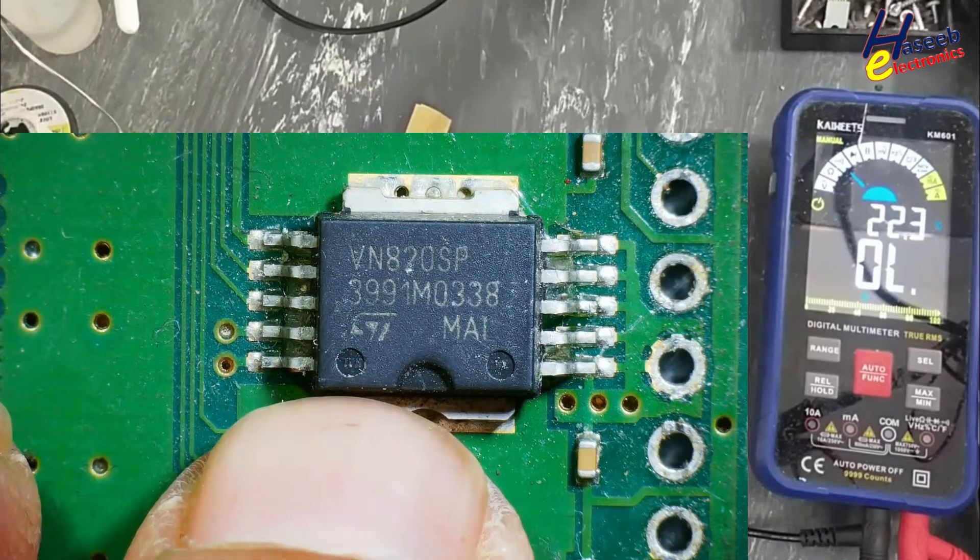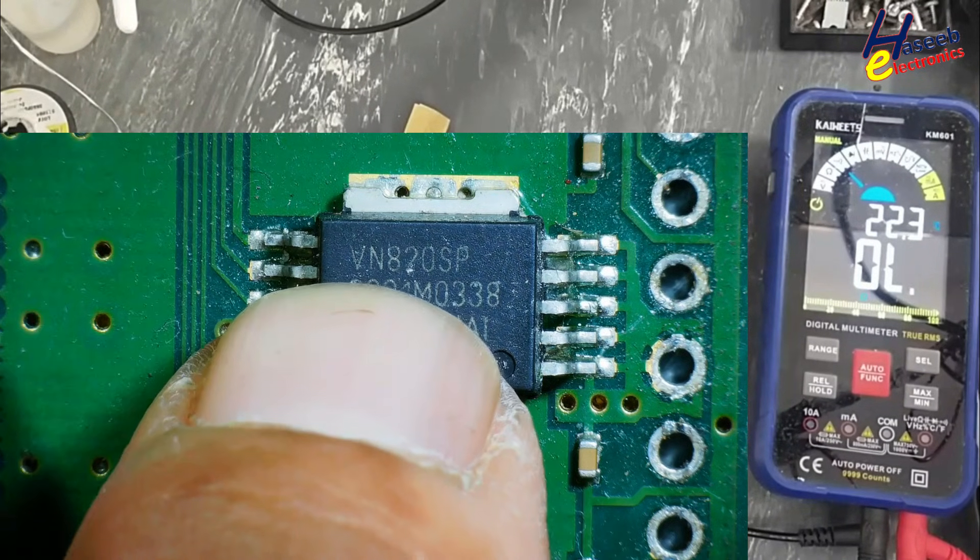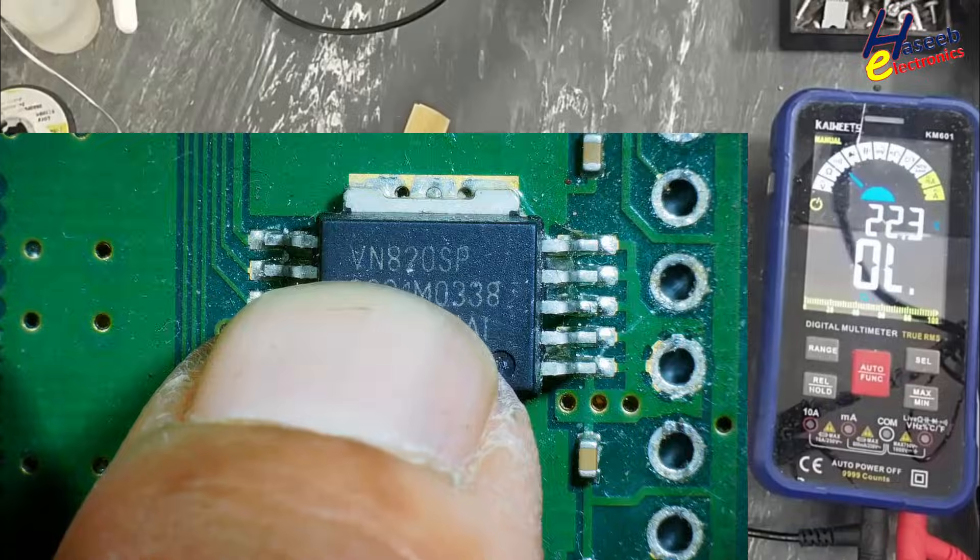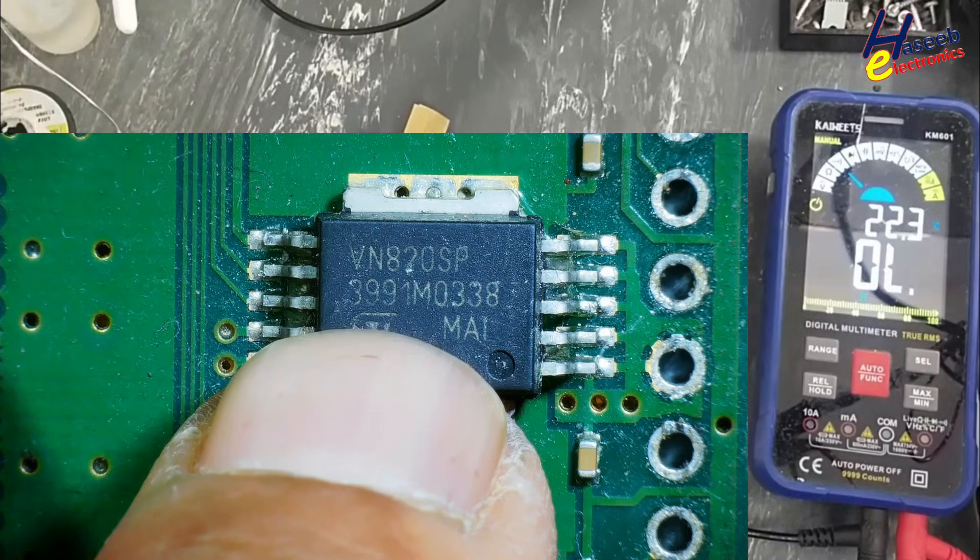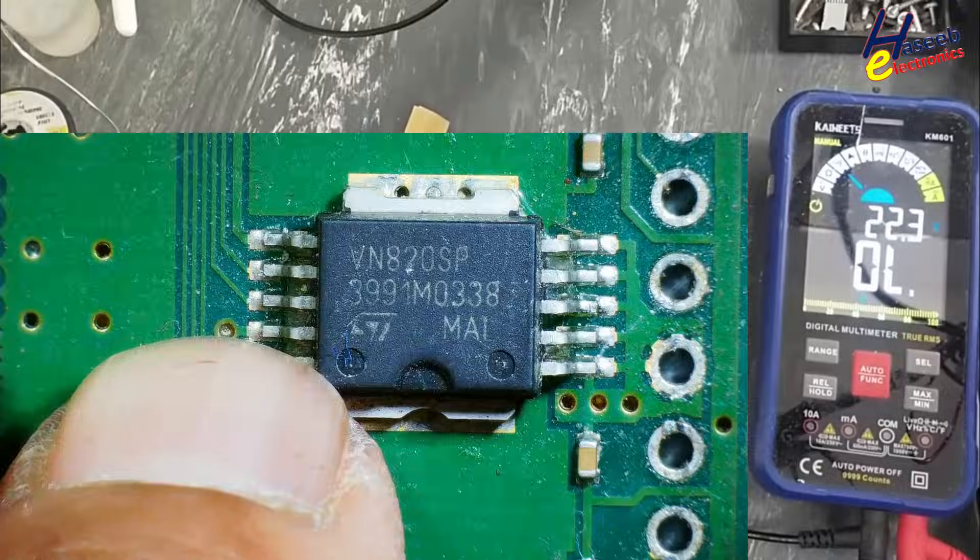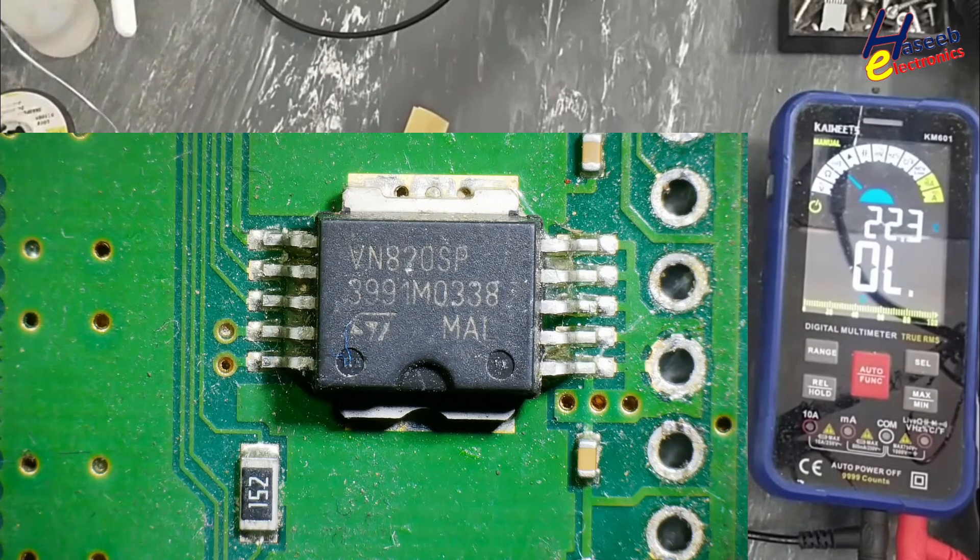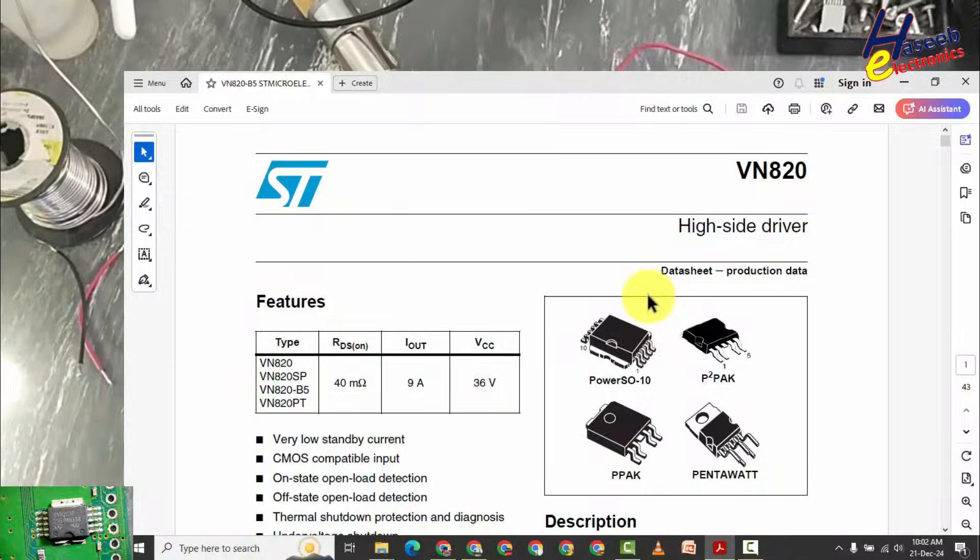Assalamu alaikum warahmatullahi wabarakatuhu friends, welcome back to my channel. We will see the datasheet of VN820 SP and we will see how to test it. It is a high side switch, high side driver in automotive applications. It will drive 9 ampere load maximum at 12 volts.